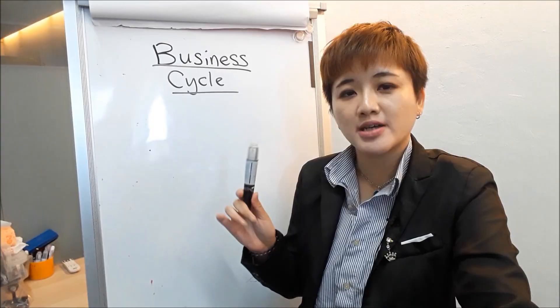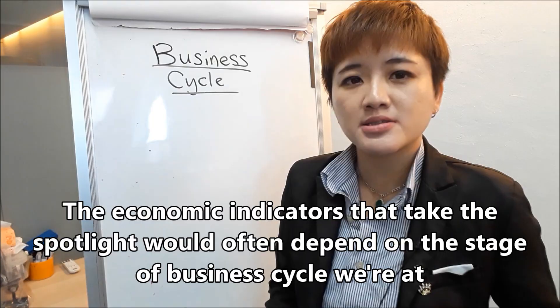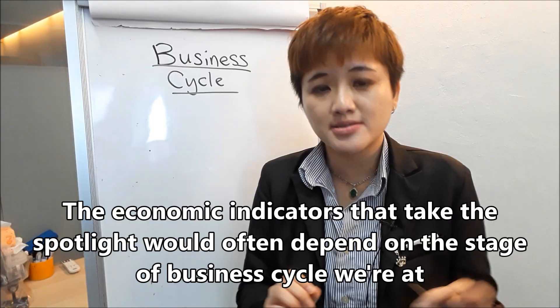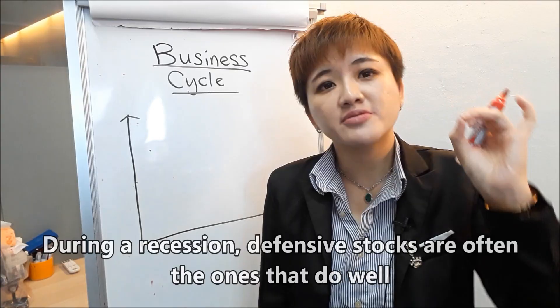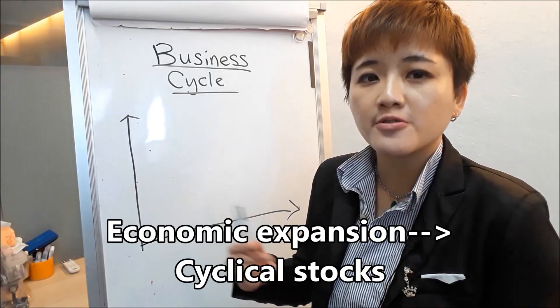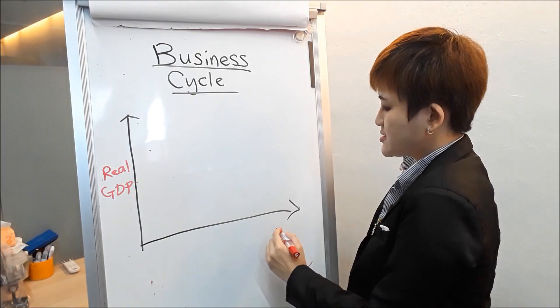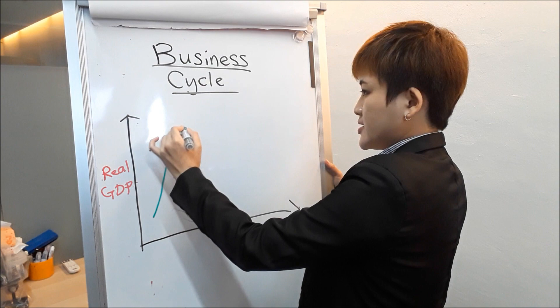The next thing you need to learn is business cycles — in other words, economic fluctuations. This is important because if you are a forex trader, during a phase of high economic growth, people focus on inflation, whereas during a recession, people don't focus as much on inflation. Different business cycles mean people focus on different economic indicators, which impacts currency movement. There are four main phases of the business cycle — stock investors also need to know this because during a recession, defensive stocks go up, while during an economic growth phase, cyclical stocks do well. On a graph, real GDP is on the y-axis and time is on the x-axis.